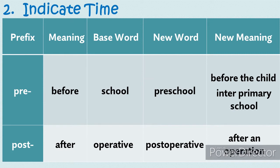The second group is prefixes that indicate time. Adding these prefixes to words indicates time — whether something happens before or after an event. There are two prefixes emphasized here: pre- and post-. Pre- means before, while post- means after. Example of pre-: when added to the base word school, the new word is preschool, meaning before the child enters primary school. Example of post-: when added to the base word operative, it becomes post-operative, which means after an operation.